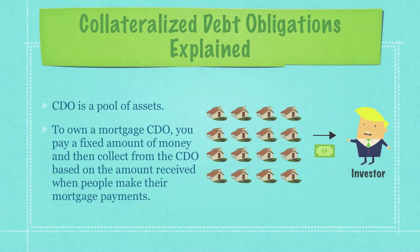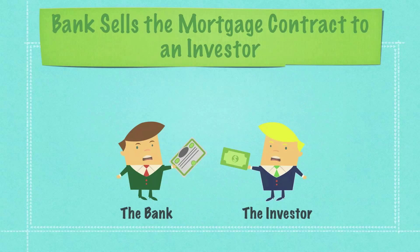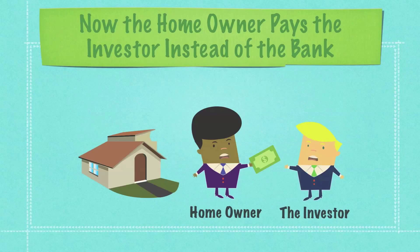Then we come to collateralized debt obligations. A CDO is just a pool of assets. I'm going to focus on mortgages because that is the heart of the collapse in the stock market. To own a mortgage CDO, you pay a fixed amount of money to own a piece of the CDO, and whenever homeowners pay principal and interest each month, you receive a percentage of that payment. To make it really simple: a homeowner goes to a bank and says, I want to buy this $100,000 home. The bank says, fine, here's $100,000 — sign this contract and promise to pay us principal and interest until the home is paid off. The bank then takes this agreement and sells it to an investor. And there you go — a collateralized debt obligation, where in essence the homeowner is paying the investor in the CDO.